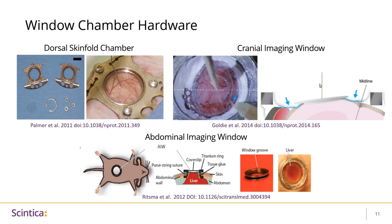I'm going to briefly mention window chambers and return to them later in the webinar. If you are planning to perform longitudinal studies, you are required to place window chambers in your animals to optically expose the organ or tissue of interest and to preserve the area from infections when animals recover between sessions. This allows you to track one animal over time, which reduces variation between animals in your data and also reduces the number of animals used in your cohort, which is ethically very important.